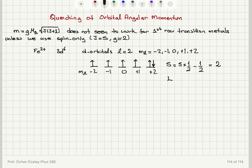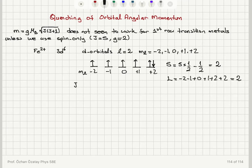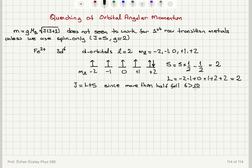For the orbital angular momentum, the m_l values are −2, −1, 0, +1, +2, and then +2 again for the sixth electron. Summing: −2 − 1 + 0 + 1 + 2 + 2 = 2, so the total orbital quantum number L = 2. Using the Russell-Saunders coupling scheme with Hund's rules, J must equal L + S since the d orbitals are more than half full: 6 electrons > 10/2. Therefore J = L + S = 2 + 2 = 4.